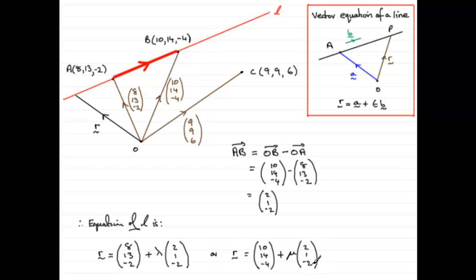You don't have to take 2, 1, minus 2, as I said before. You could take 4, 2, minus 4. You could double this vector. It doesn't matter. You could change the direction of it. You could halve it. As long as it is a multiple of this.